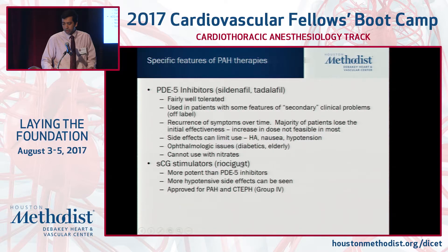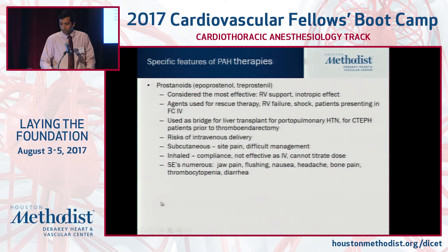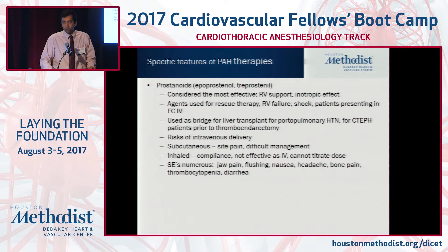The sGC stimulator is the new kid on the block, acting on the same nitric oxide pathway but independently of nitric oxide, making it more potent than PDE5 inhibitors. It is the only approved drug in Group 4 pulmonary hypertension in inoperable patients. Prostanoids are drugs used in patients who are much more progressed — though the benefit is greater compared to oral therapies, they are generally reserved for advanced patients. They can be given IV, subcutaneous, inhaled, or orally, though inhaled and oral formulations are not as efficacious as IV.